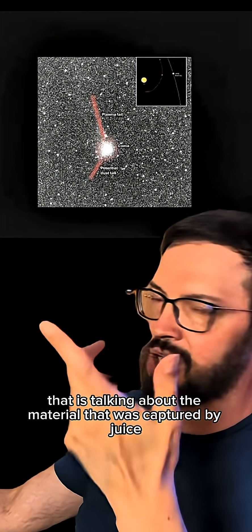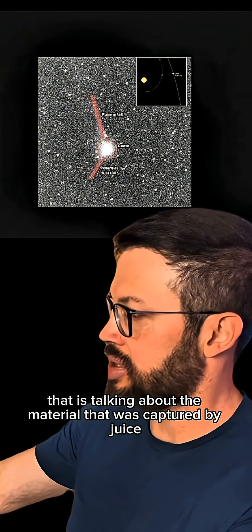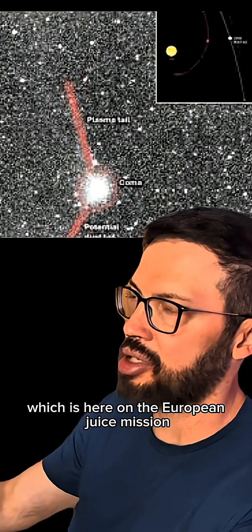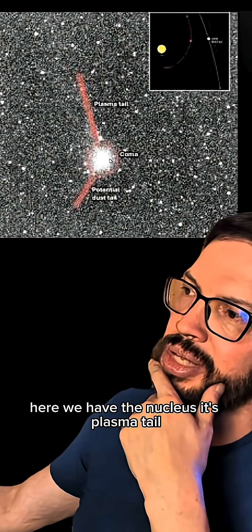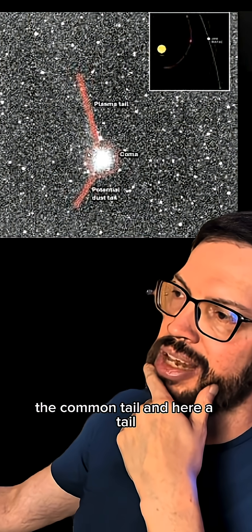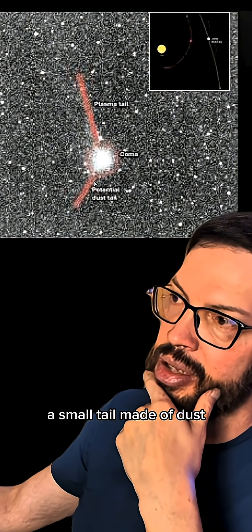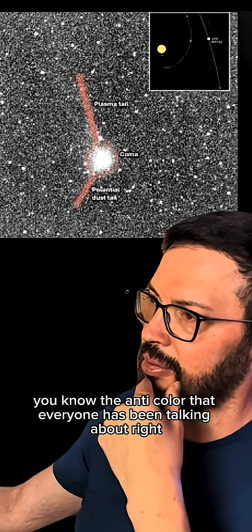And there is this other image here that is talking about the material that was captured by juice, which is here on the European juice mission. Here is the 13 Atlas. Whoops, I messed up. There we go. Here we have the nucleus, its plasma tail, the comet tail. And here, a tail, a small tail made of dust. You know, the antichalda that everyone has been talking about.